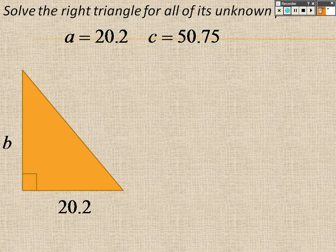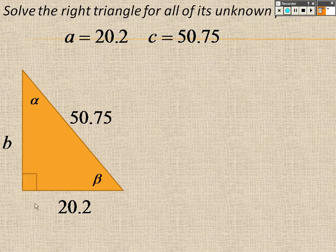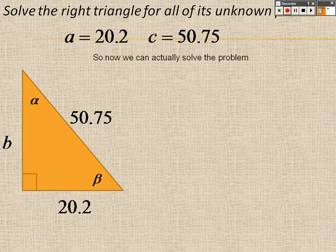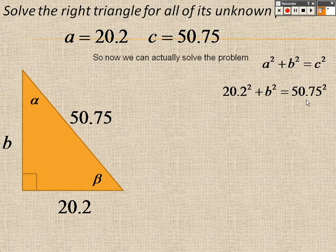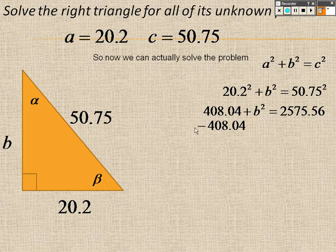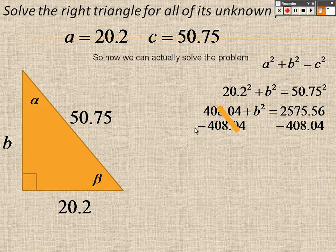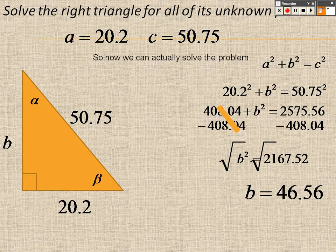So now if I'm given two side lengths and no angles, so I have a, I have c, but I don't have b. I can find all the side lengths now, because I can use the Pythagorean theorem to do that. So I know a, I don't know b, and I know c. So a squared, I end up getting 408.04. C squared, I end up getting 2575.56. So to get b by itself, I minus 408.04. So I get b squared equals 2167.52. And I square root both sides and get 46.56. So now I know all the side lengths.